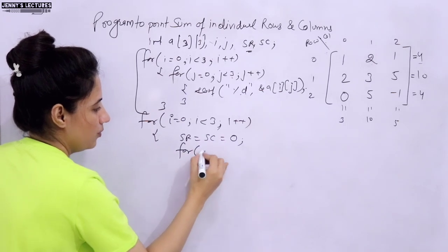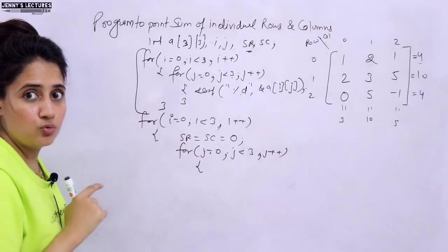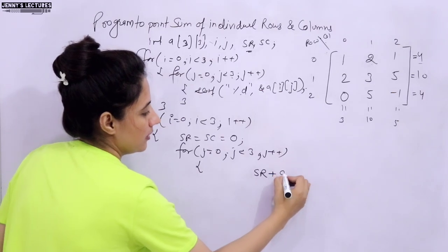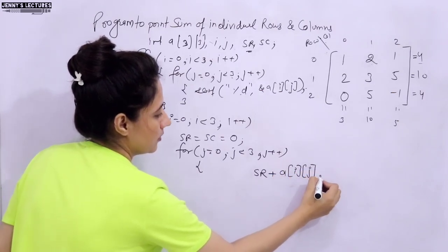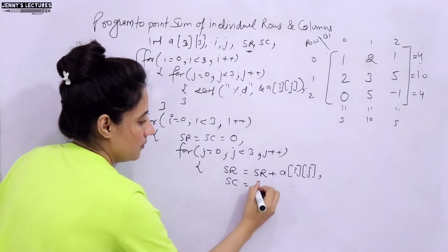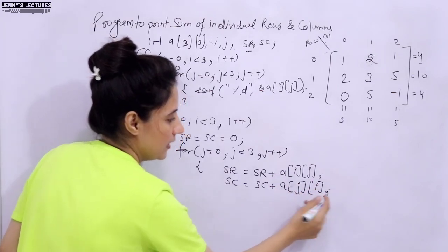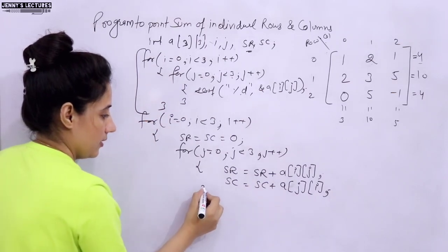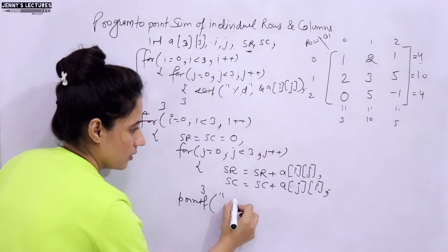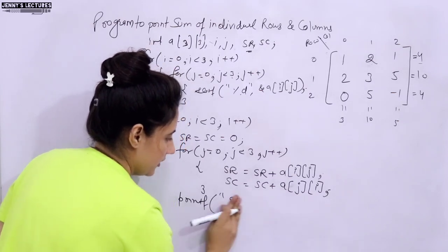Inside the outer loop, we initialize SR = SC = 0. Then, another inner for loop: j from 0 to less than 3. Inside this inner loop, we compute the sum of rows as SR = SR + A[i][j], and the sum of columns as SC = SC + A[j][i]. We interchange i and j for the column sum.